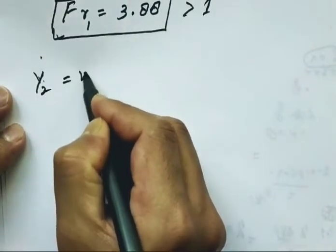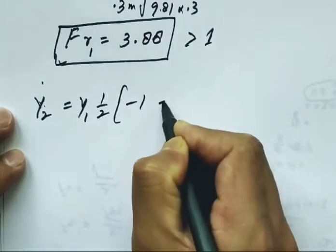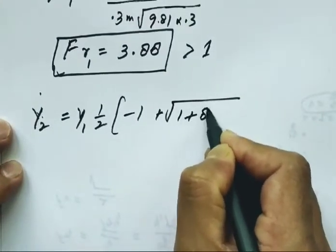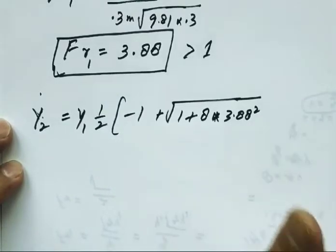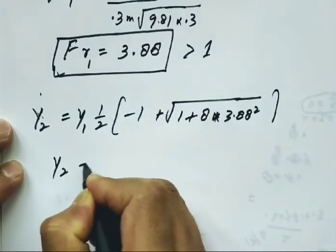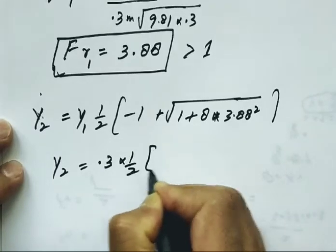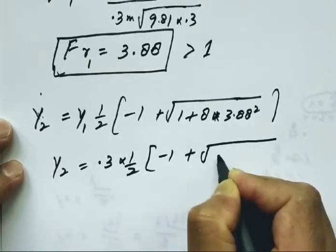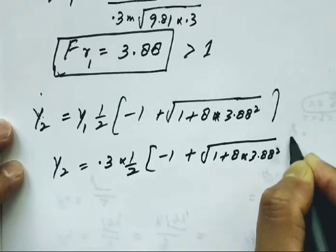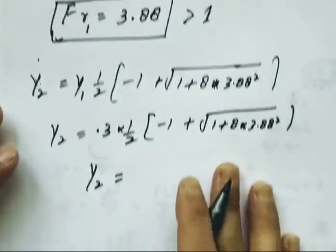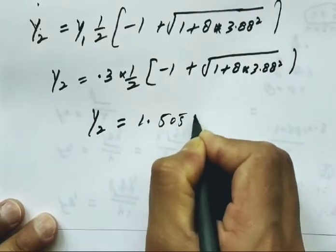Y2 equals y1 into half of minus 1 plus under root of 1 plus 8 into 3.88 whole square. Y1 is 0.3 into 1/2 times minus 1 plus square root of 1 plus 8 into 3.88 whole square. When we calculate, y2 value is 1.505 meters.